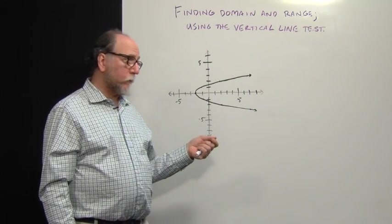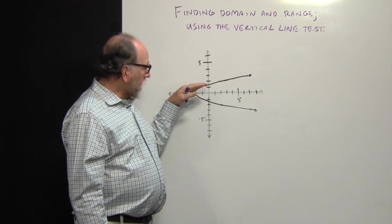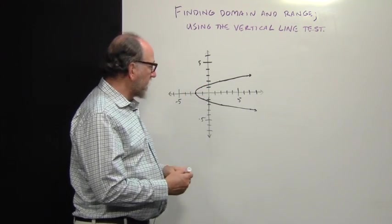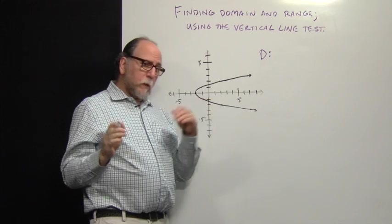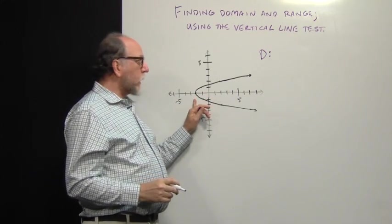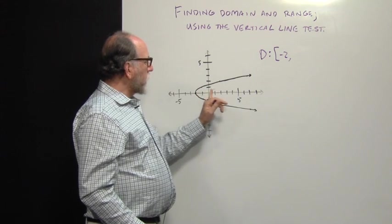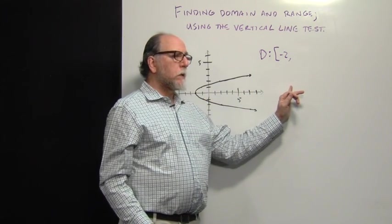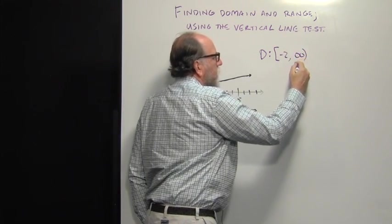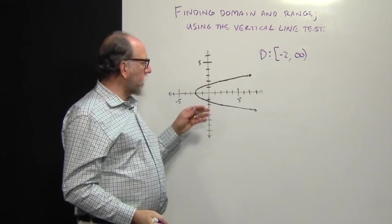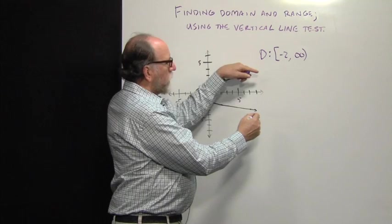So here's a second graph that we want to do the same thing with: find the domain and range and then test to see whether this is a function or not. The domain is the set of x values, or input values. And that starts here at negative 2. It includes negative 2 as one of the values because that point is right on negative 2. But you can see that this graph has arrows that point toward positive infinity on this side. So it ends at positive infinity, or it doesn't end. It keeps on going toward positive infinity. These arrows indicate that the graph continues to go out to the right.